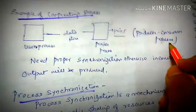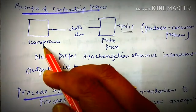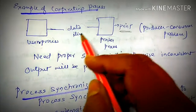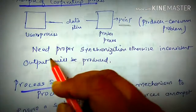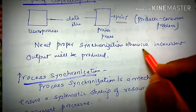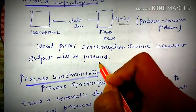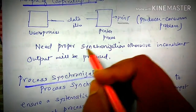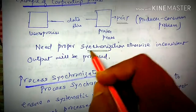Consider the producer-consumer problem: a user process produces data which is consumed by a printer process. We need proper synchronization between them; otherwise, inconsistent output will be produced.